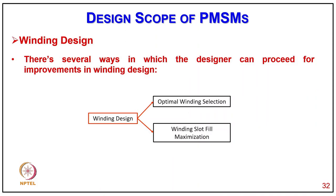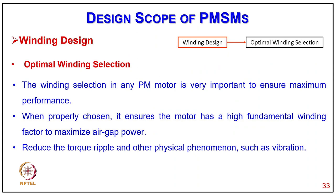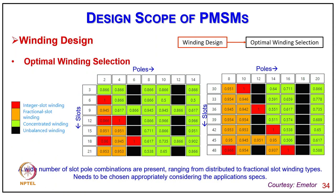Coming to winding design, there are several ways to improve winding design: optimum winding selection and winding slot fill maximization. Winding selection in any PM motor is very important to ensure maximum performance. When properly chosen, it ensures the motor has the higher fundamental winding factor to maximize the air gap power and reduce torque ripple and other physical phenomena such as vibration. Diagrams show optimum winding selection for different poles with winding factors: integral slot winding in red, external slot winding in orange, concentrated winding in green, and unbalanced winding in black.